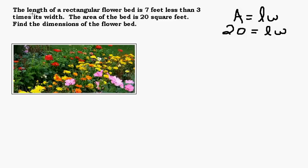Well let's look at this fact right here. The length of the rectangular flower bed is 7 feet less than 3 times its width. So the length is being described in terms of the width. They're telling us how long it is in relation to the width.